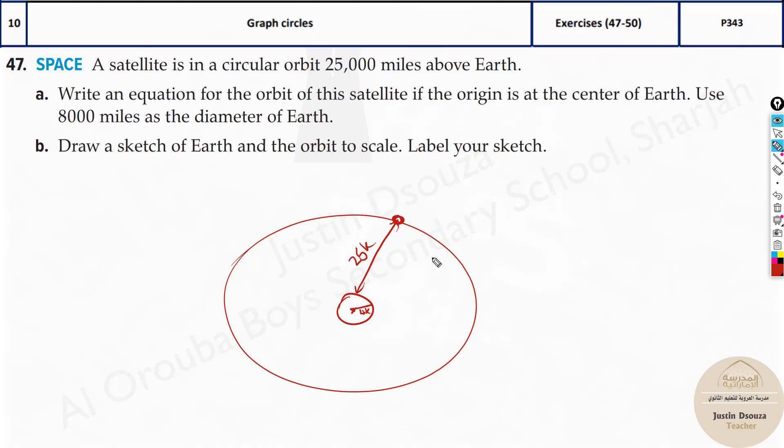Now what is the equation of the circles? It's the most easiest equation. It's x minus h the whole square plus y minus k the whole square equals r square. Now since it is in the center of the origin of the Earth, it will be 0, 0. So we just write this equation x square plus y square equals r square.